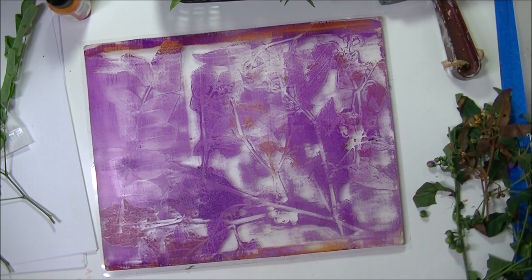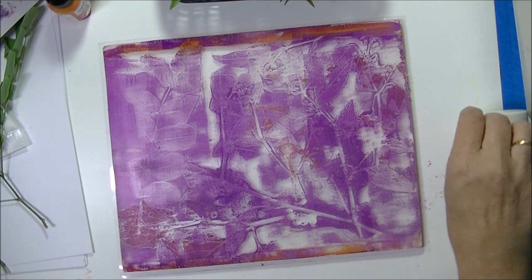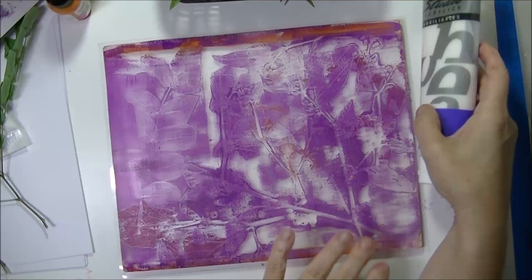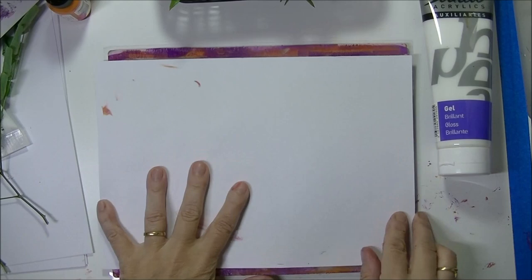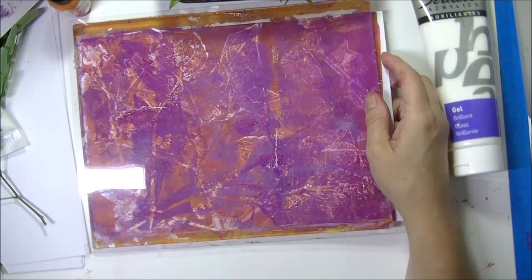Et cette fois au lieu d'utiliser de la peinture blanche, je vais utiliser du gel medium parce que le gel medium est transparent et ça va pouvoir me permettre de compléter une autre de mes pages que j'ai déjà. Alors par exemple pour savoir si celle-ci irait bien je vais la poser et je vais retourner. Ça irait pas mal mais on n'arrive pas bien à distinguer, ça manque un peu de contraste.